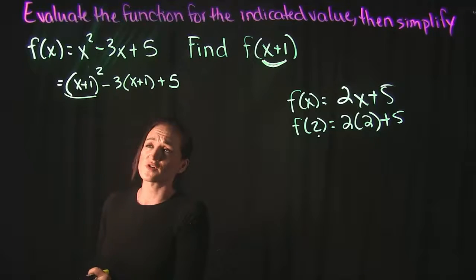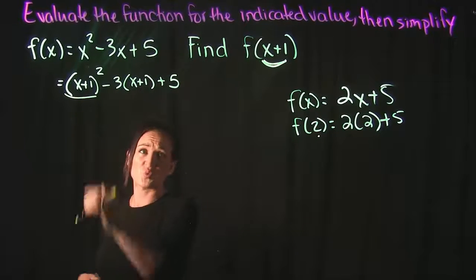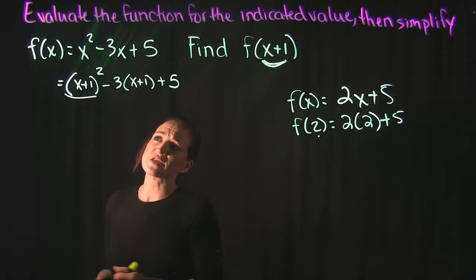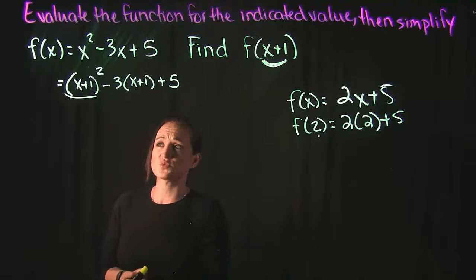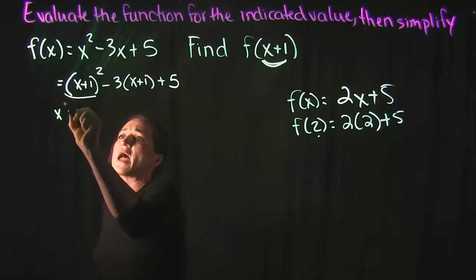The first thing we have here is x plus 1 squared. Keep in mind that does mean x plus 1 times x plus 1, so when you multiply that out you get x squared plus 2x plus 1.